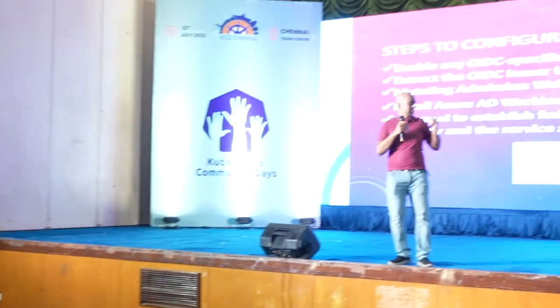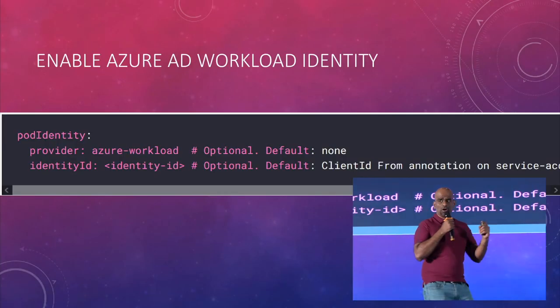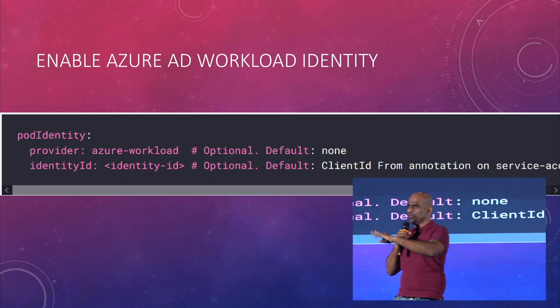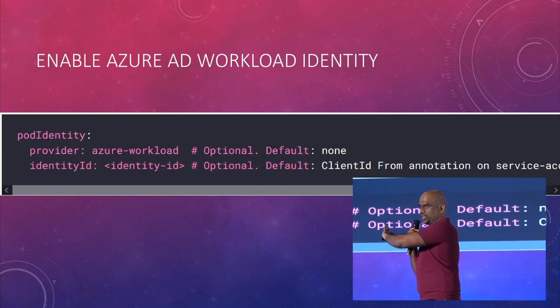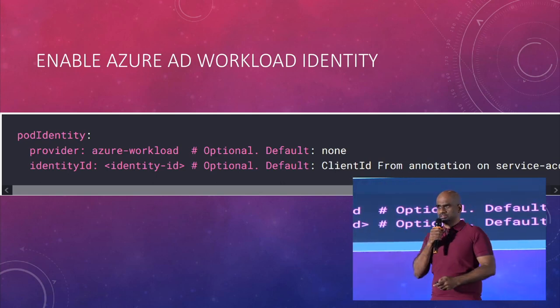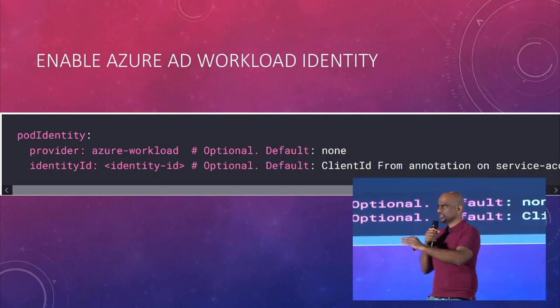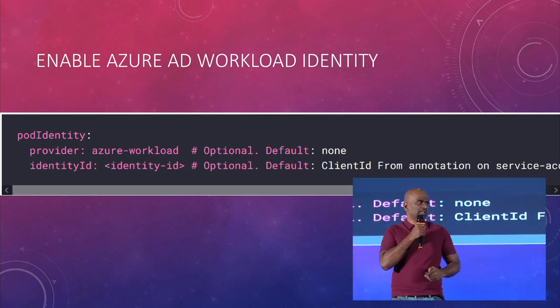Another question: how is ACWI different from service principals? ACWI has simplified it for KEDA — it still uses service accounts, service principles, and OIDC under the hood. For KEDA deployments or KEDA jobs, you just need to put two lines. This is specifically for KEDA pods, not all pods. There are lots of scalers in KEDA, and this is for authorization.